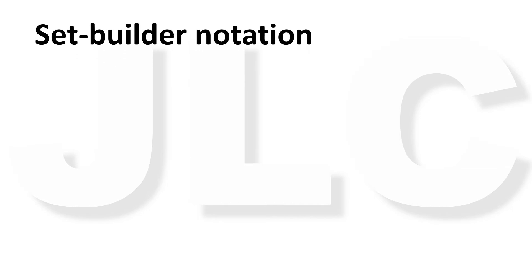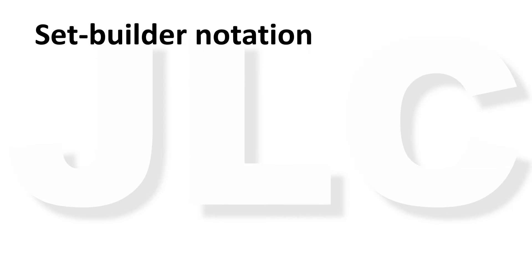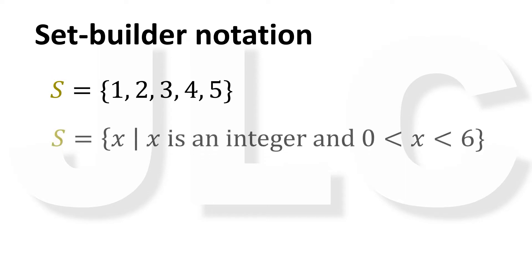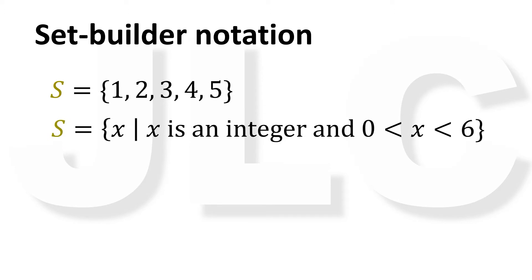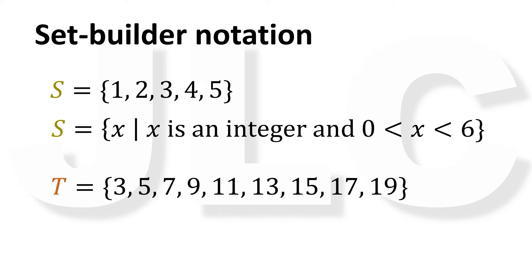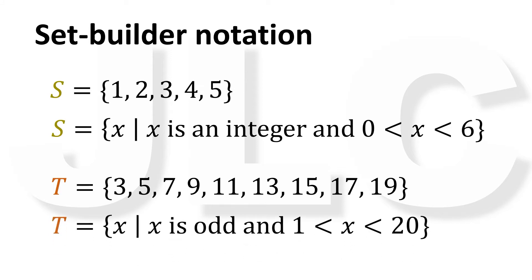Sets can also be written in set builder notation. If S is a set with elements 1, 2, 3, 4, 5, we can write this as the set of all x such that x is odd, and x is greater than 1 but less than 20.